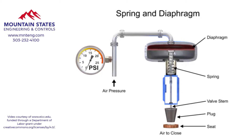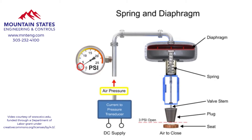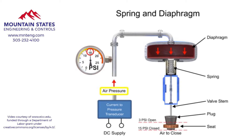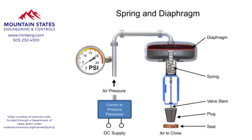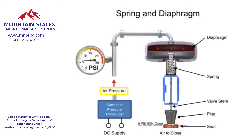To vary the position of the restrictor and flow through the valve, a current to pressure transducer can be used to provide a 3 to 15 PSI signal to the diaphragm. At 3 PSI, the valve is maintained open, and at 15 PSI, the valve is maintained closed. Pressures between the 3 to 15 PSI range proportionally change the flow of the valve. For example, a pressure of 9 PSI applied to the diaphragm moves the spring and valve stem to 50% of operating range.